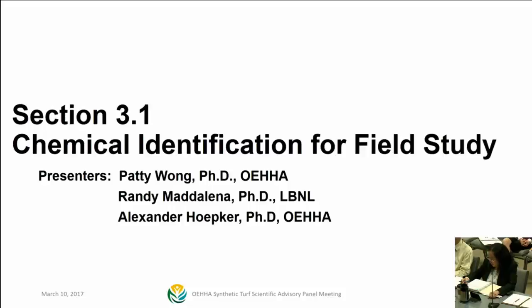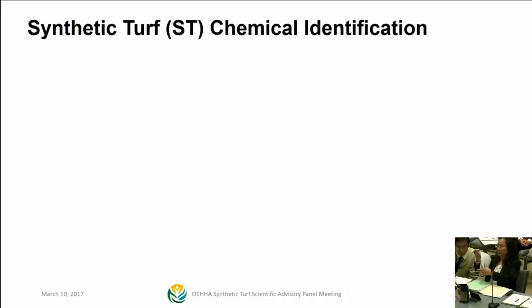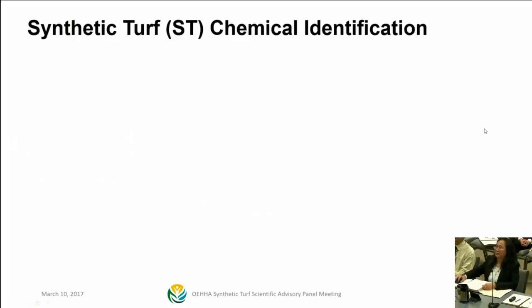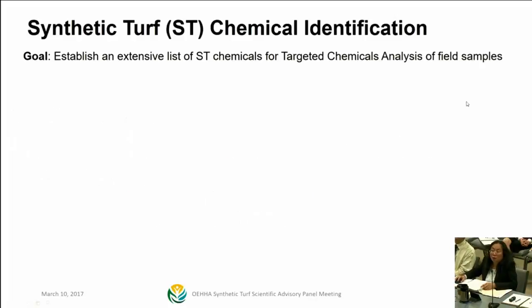This section will cover the process for identifying chemicals for field study and the use of supplemental information to facilitate this chemical identification process. The goal is to establish an extensive list of synthetic turf chemicals for our targeted chemical analysis of field samples.